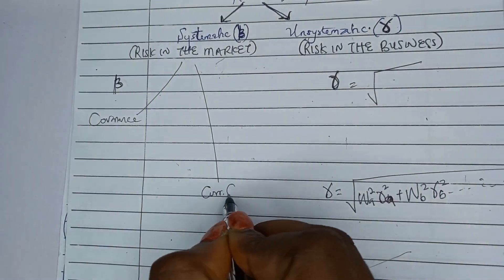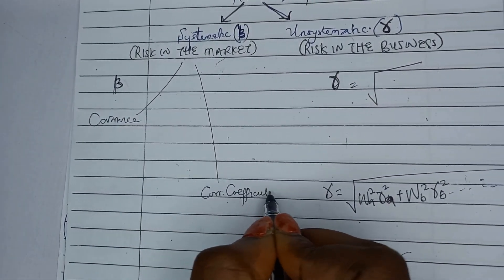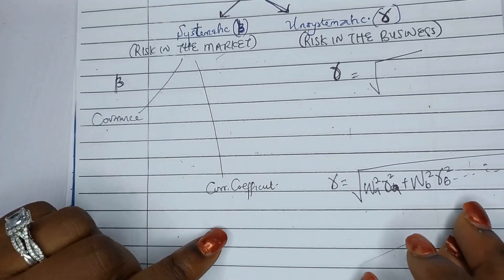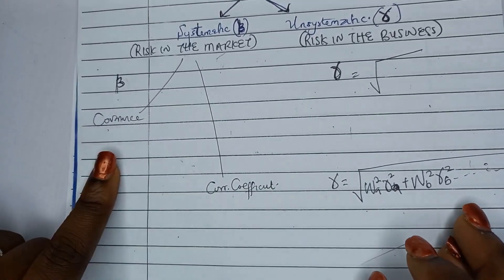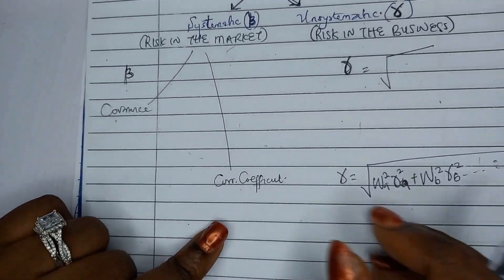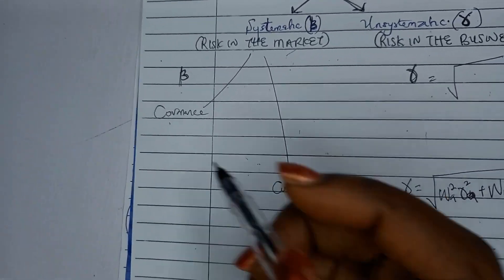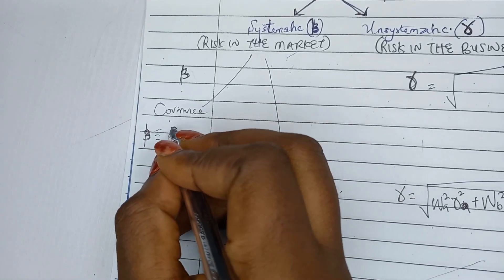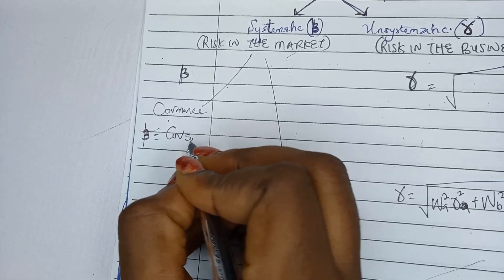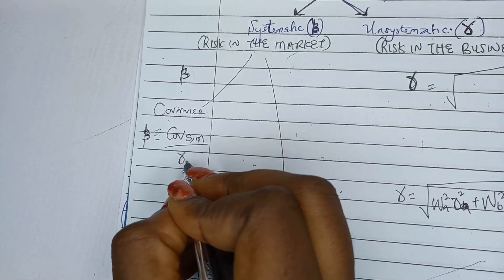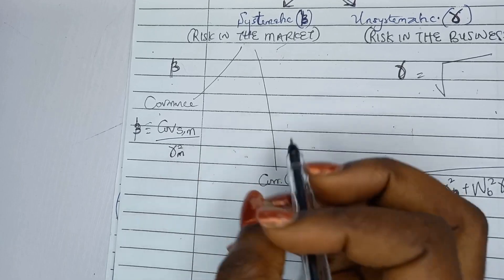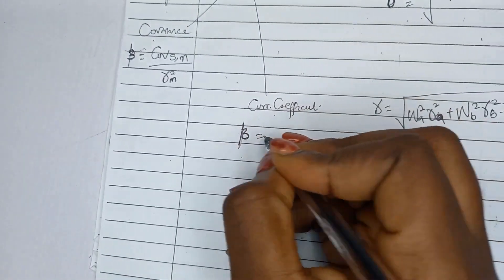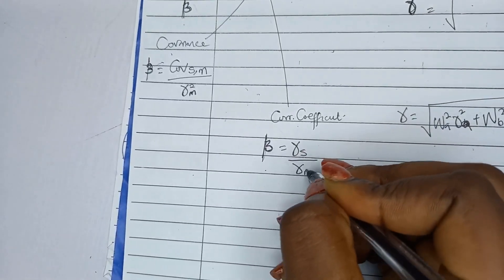From the point of view of covariance, it depends on the information you are given. If you are given covariance, use the covariance formula; if you are given correlation coefficient, use the correlation coefficient formula. Your systematic risk (beta) is equal to the covariance between the security and the market divided by the variance of the market.